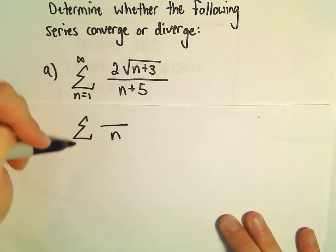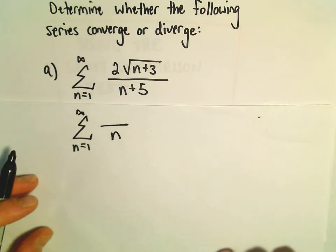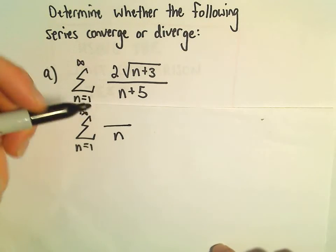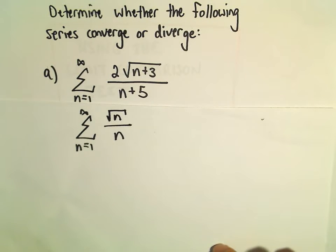So in the denominator, we've got the power of n to the first, nothing to worry about there. Underneath the radical, we've got an n to the first power, so I'm going to keep that. But again, I'm going to keep it underneath the square root.